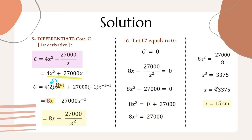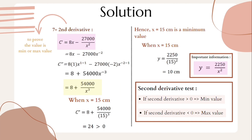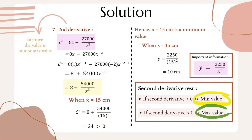We set the first derivative equal to zero to find the value of x. Setting 8x − 27000/x² = 0 and solving gives x = 15 centimeters. When we get the value of x, we perform the second derivative test to check whether x = 15 is a minimum or maximum. If the second derivative is greater than zero, it is a minimum value; otherwise it is a maximum.